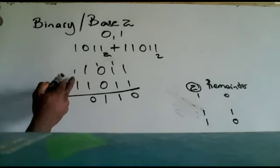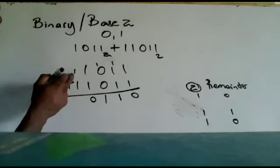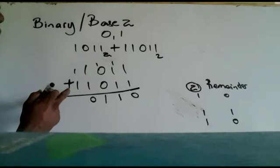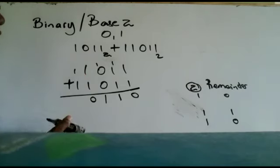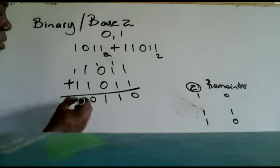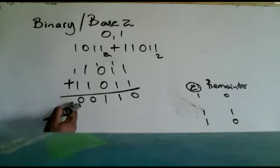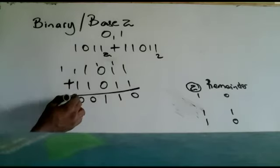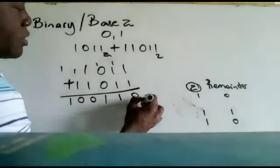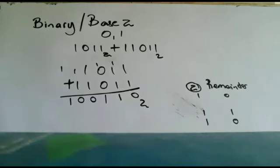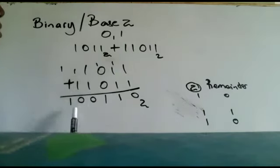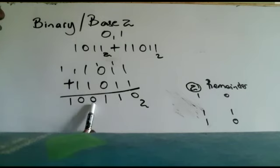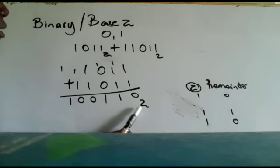Again 1 plus 1 is 2: one set of two, no remainder — write 0 and carry. Then 0 plus 1 is just 1 — we write 1. So the answer when adding 1011 plus 11011 in base 2 is 100110 base 2.